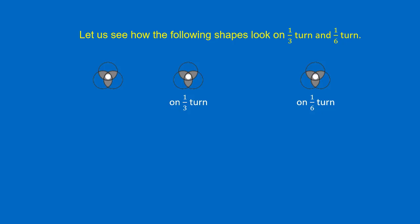Let us take another shape. On one-third turn, it looks the same. So this shape looks the same on one-third turn but doesn't look the same on one-sixth turn.